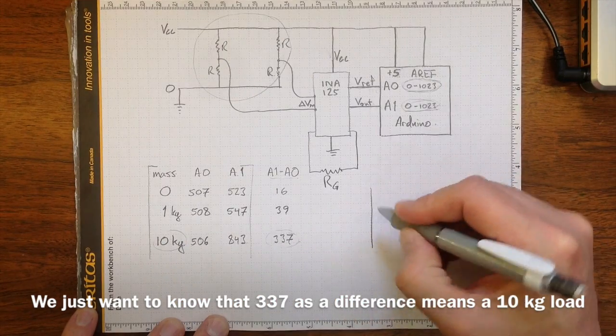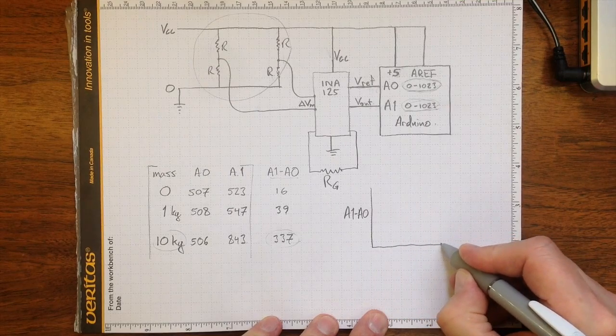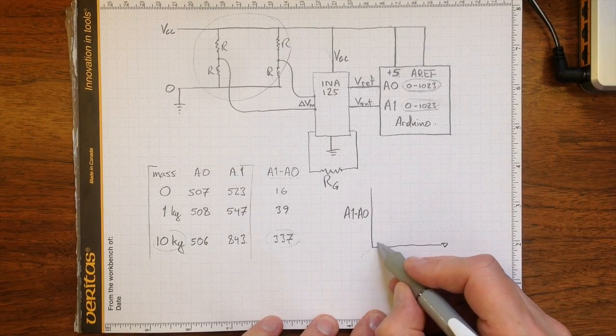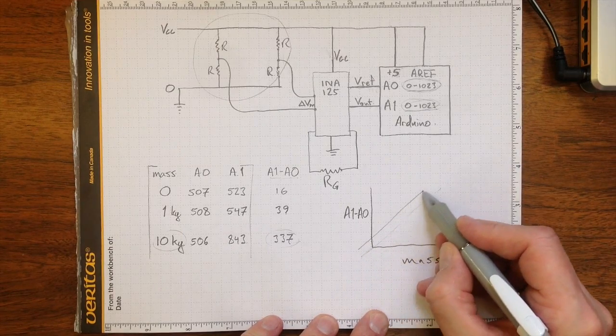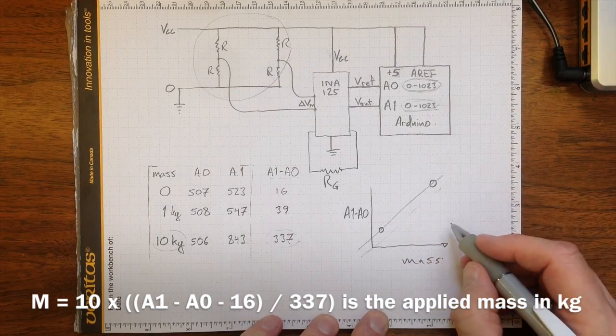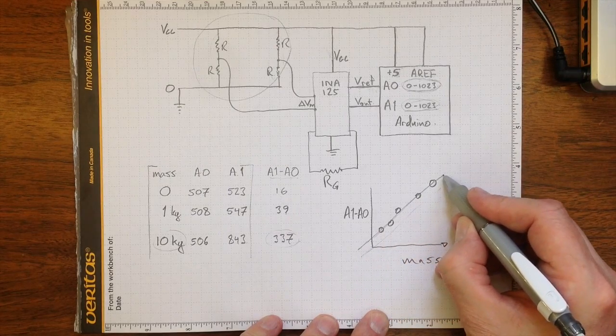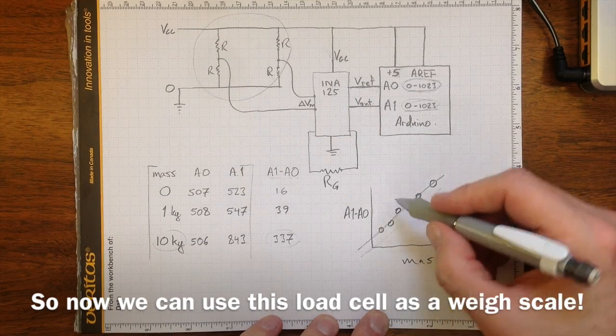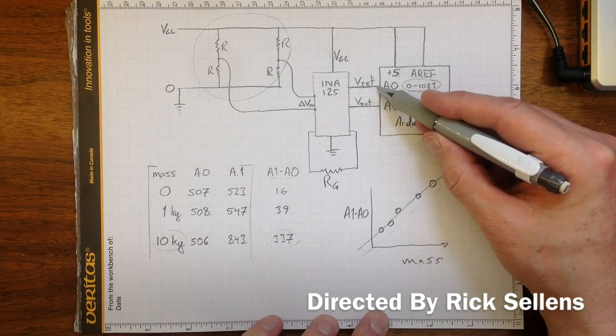If I draw a graph of A1 minus A0 versus the applied mass, I expect that I'm going to see not quite a perfect line straight through the origin, but there may be some offset value. I still expect that I'm going to see a straight line so that there's my 1 kg value and there's my 10 kg value. And if I take some more data points in between, I should be able to come up with a calibration relationship that allows me to measure the mass or the force applied to our cantilever beam load cell in comparison to the analog values measured here, the difference between the amplifier output and the reference voltage.